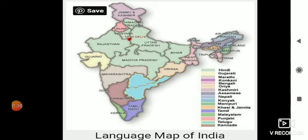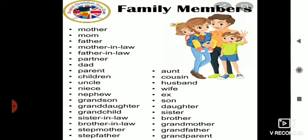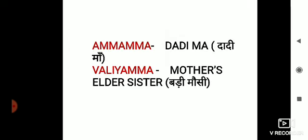Grandparent is a common term for grandmother and grandfather. Now you must be able to write these. I have given them in written form also — you can write them down in your copy and learn from the worksheet I have given. In the chapter we came across two words from Malayalam language: 'amma amma' means dadi ma — aap ki ma ki ma ya papa ki ma, that is dadi ma. 'Waliyamma' means mother's elder sister — mami ki jo badi behen hoti hai — badi mausi.